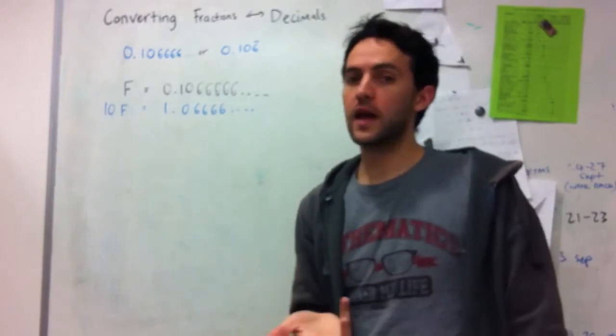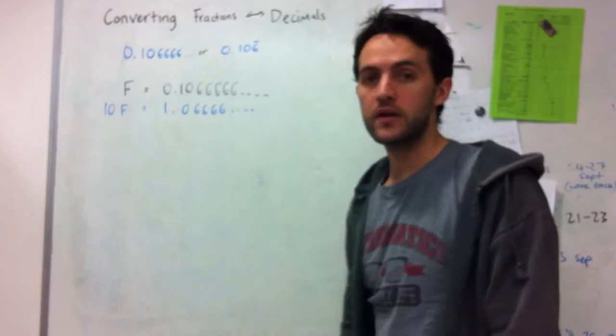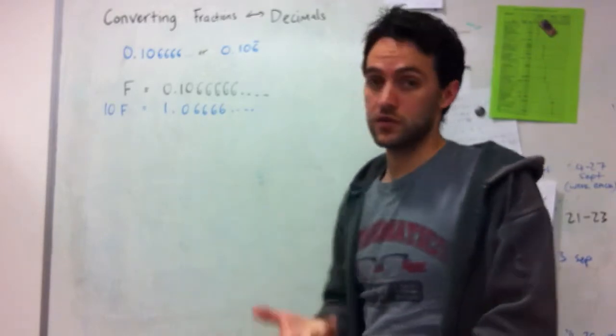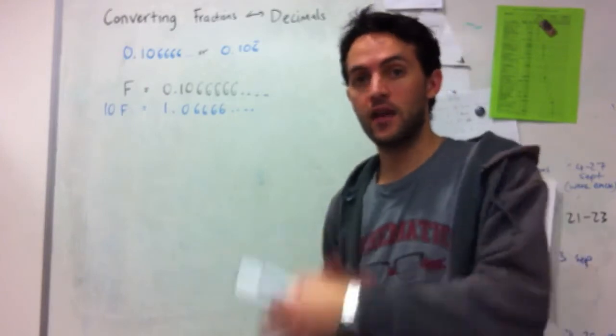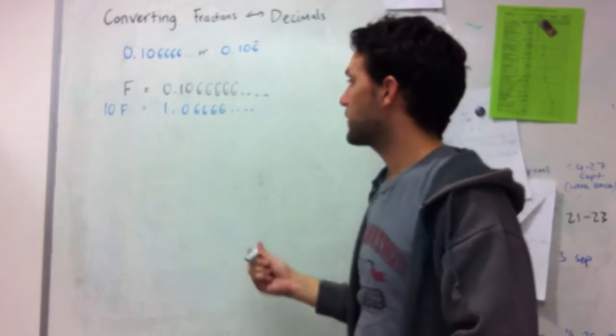But what you might notice here is that these two numbers don't have the same decimal component. So what I'm looking for is two numbers that have exactly the same decimal component so that I can do some subtraction and then get rid of the decimal part so that I have whole number quantities that will lead to my fraction.